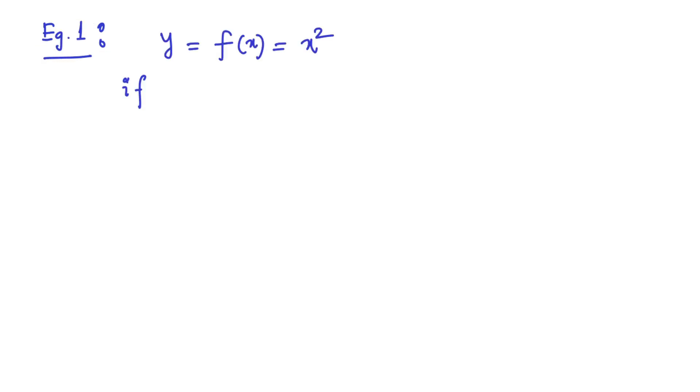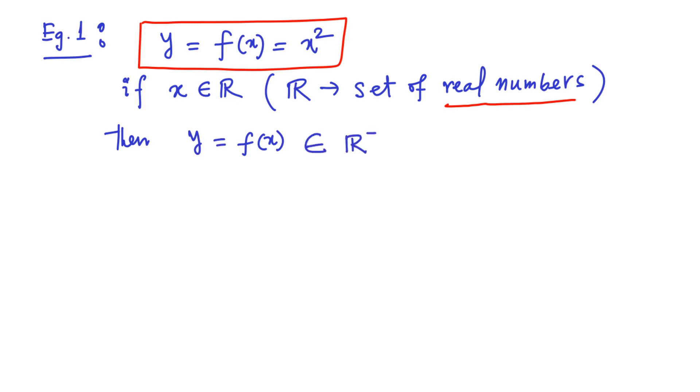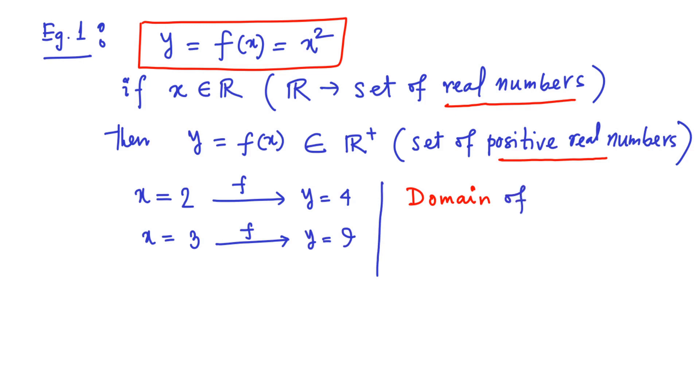Let us take an example. Say, Y equal to F of X equal to X square. Now, if X are allowed to be any real numbers, then the Y, where the function is constructed, will only be the set of positive real numbers. For example, if you put X equal to 2, you would get Y equal to 4. If you put X equal to 3, you will get Y equal to 9. Clearly, the domain of the function F is the set of all real numbers. On the other hand, the range of the function F is the set of positive real numbers.